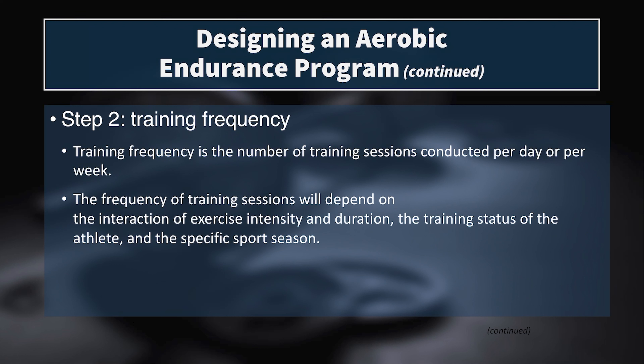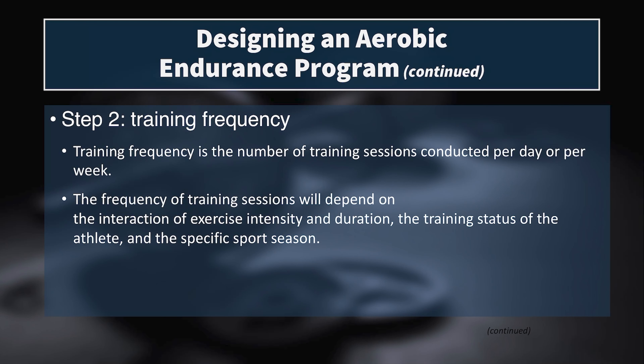Step two is to determine training frequency—the number of training sessions conducted per day or per week. Frequency depends on the interaction of exercise intensity and duration, the athlete's training status, and the specific sport season. For a strength and power athlete approaching competition, you'd likely decrease aerobic training frequency. For a runner or cyclist already training six to ten times per week with double days, you'd maintain frequency and increase volume through session duration or intensity.